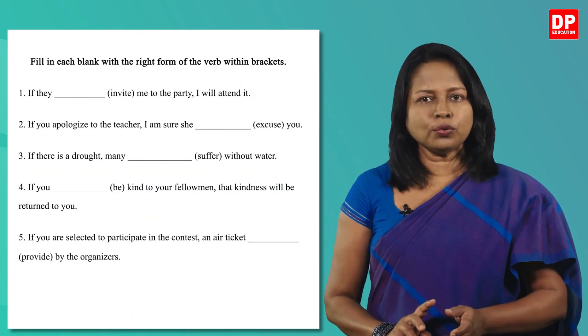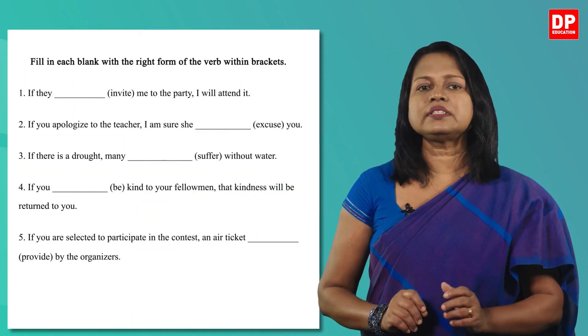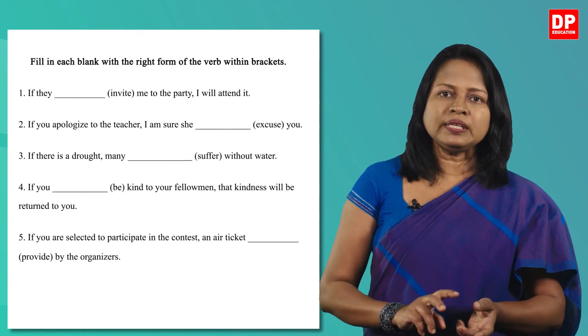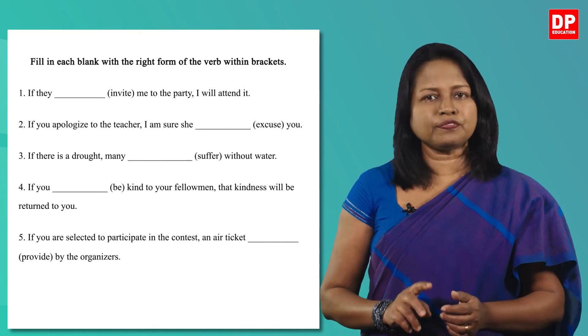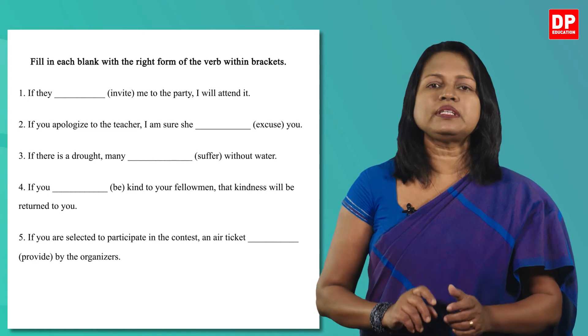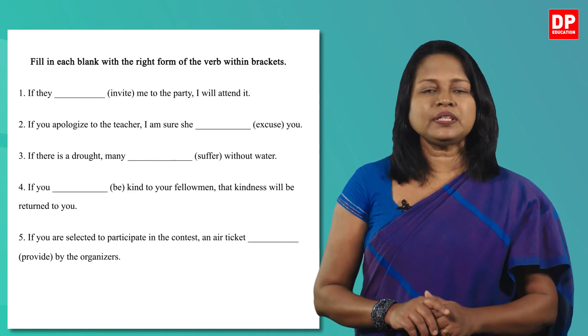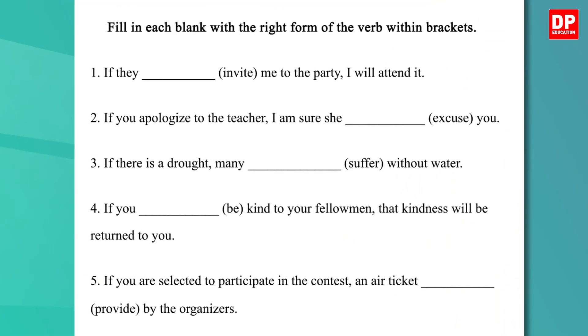I hope now you can understand the type 1 conditional sentences. Now let's do an activity from your textbook. This is activity 4 on page 132. You have to fill in the blanks with the correct form of the verb given within brackets. Pause the video and do it. Let's check the answers now.